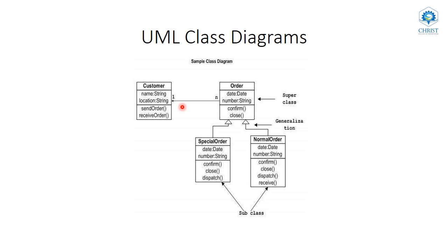When we draw a class diagram, we must give meaningful names to classes — like Customer, Order, Special Order, Normal Order — instead of A, B, C, D. We must clearly identify the relationships between classes, whether it is inheritance, generalization, or association. For each class, we should represent only the most important variables and methods. Including everything in a class makes the diagram very large and reduces its readability. This concludes our discussion of UML class diagrams. The next video lecture will explain UML use case diagrams.